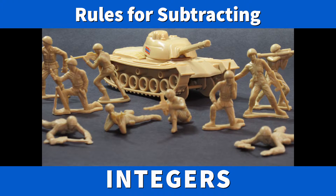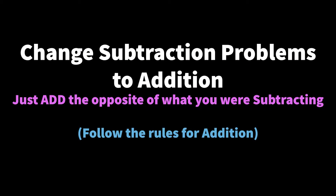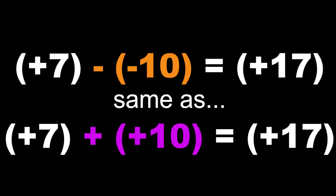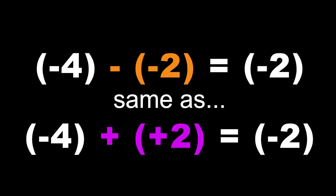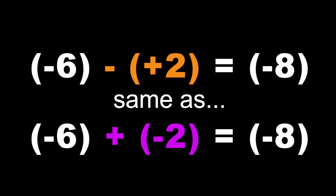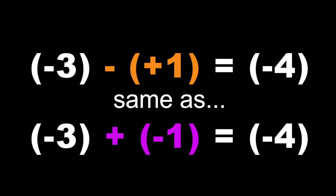Now let's look at some rules for subtracting integers. Basically, just change subtraction problems to addition — add the opposite of what you were subtracting, then follow the rules for addition. For example: two minus three is the same as two plus negative three. Seven minus negative ten is just like seven plus positive ten. Negative four minus negative two is the same as negative four plus positive two. Negative one minus negative eight is just like negative one plus positive eight. Negative six minus two is the same as negative six plus negative two. And negative three minus positive one is just like negative three plus negative one.